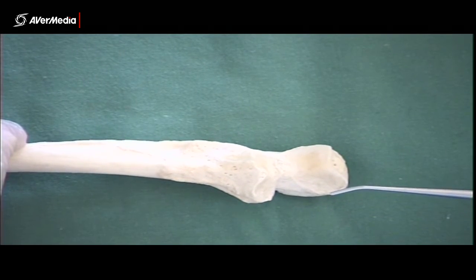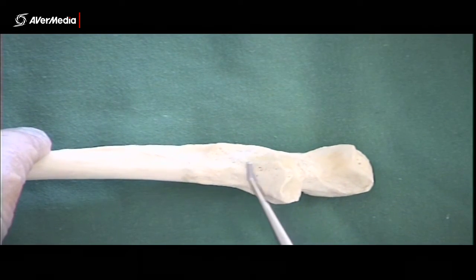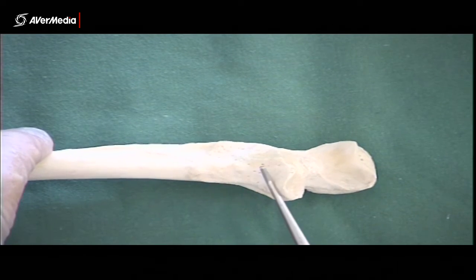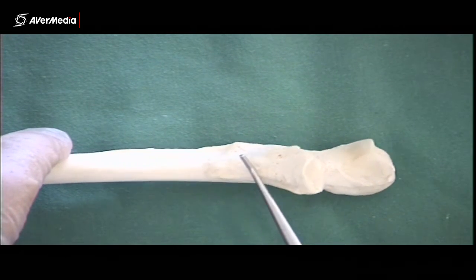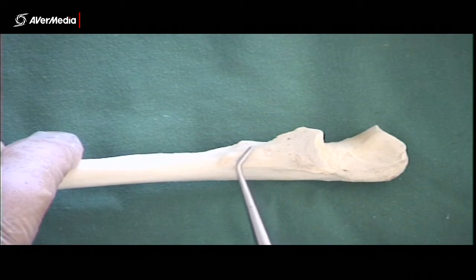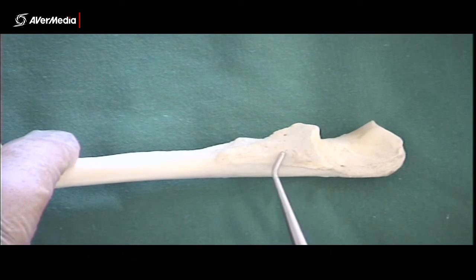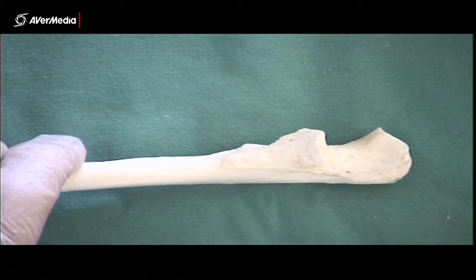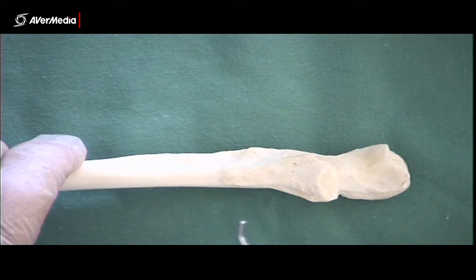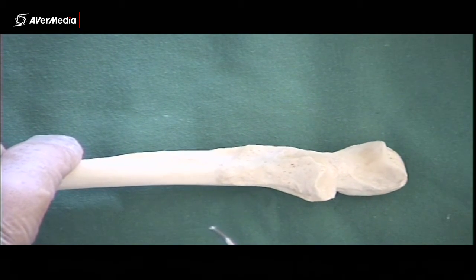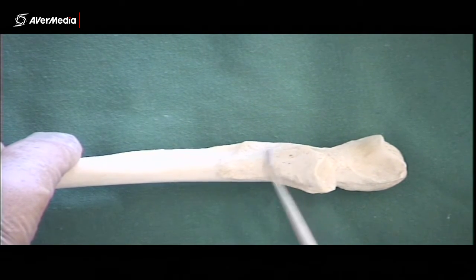And then, just inferior to the coronoid process, we have the ulnar tuberosity. And what attaches there? No, not the biceps brachii, but brachialis. So the brachialis muscle attaching in there.